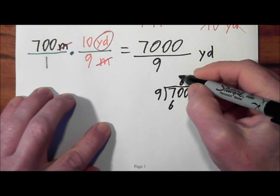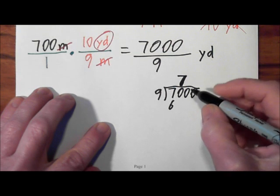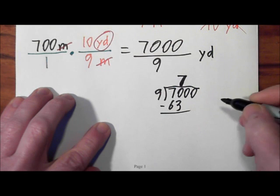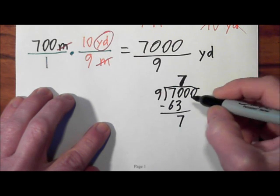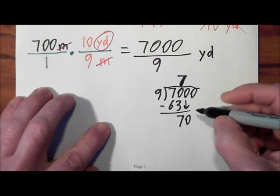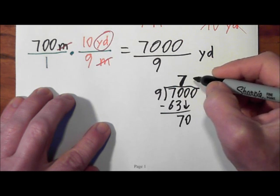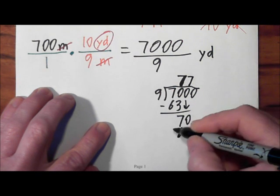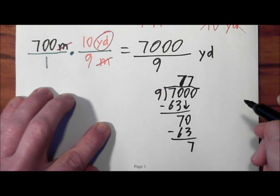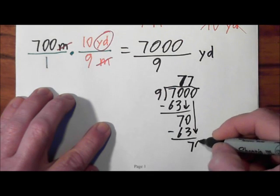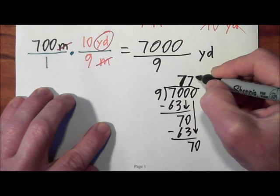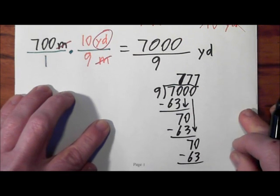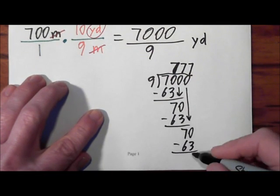No, it goes in 7 times, and that's 63. So it goes in 7 times. 7 times 9 is 63. When you subtract, you get a 7. You bring down your next digit. 9 goes into 70 7 times. 7 times 9 goes into 70 7 times, 7 left over.